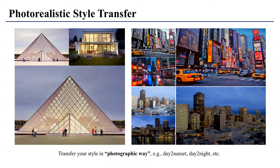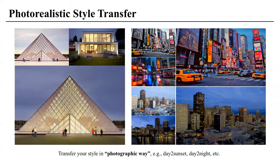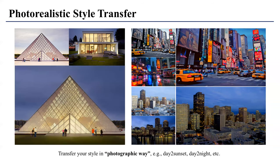Meanwhile, there is another kind of style transfer called photorealistic style transfer. This problem is harder than artistic stylization in that it has to satisfy two contradicting objectives simultaneously. One is to achieve a very locally drastic effect — for example, it needs to turn on the lights. While these effects should not distort the edges and regular patterns — for example, the windows should remain aligned while you are changing the image from day to night.